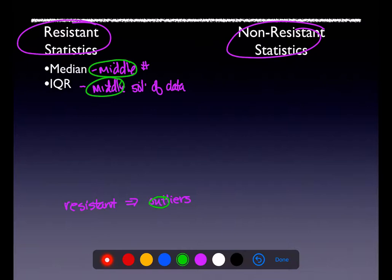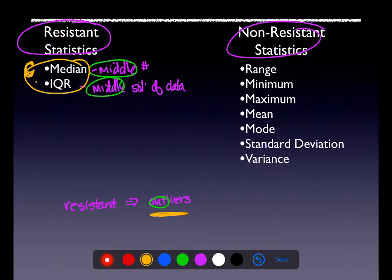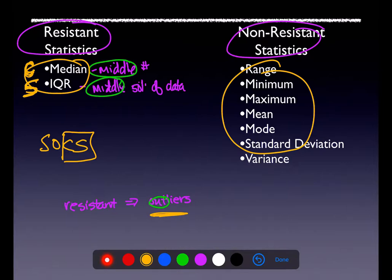Since the median and IQR capture the middle, they aren't affected by outliers on the extremes. Every other stat — range, min, max, mode, mean, standard deviation, variance — gets affected by outliers. So if I have outliers in a data set, I'll use the median for my measure of center and the IQR for my measure of spread. When things are roughly symmetric, I can use any of them.